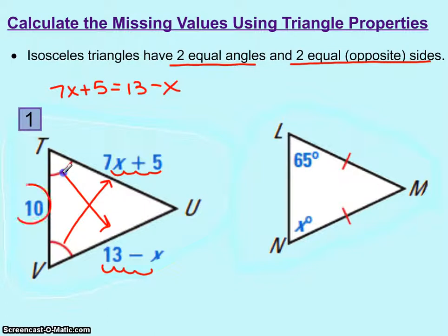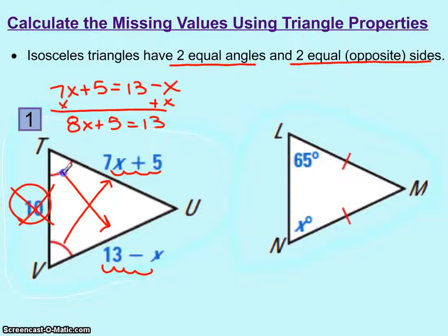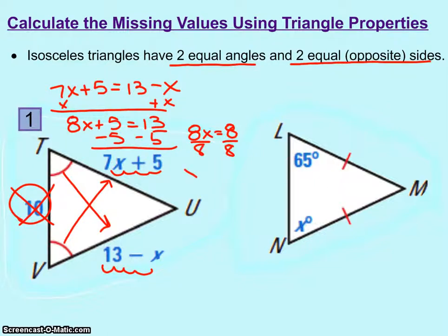This 10 over here on the left is a distractor — we do not need that number for this problem. Adding x to both sides: 8x plus 5 equals 13. Subtracting 5 from both sides, we get 8x equals 8. And we find out that x is 1.